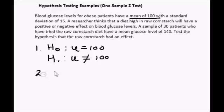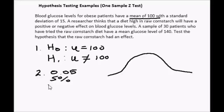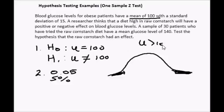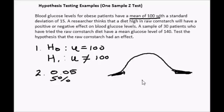The next step is to state the alpha level. If the alpha level is not mentioned in the question, use the standard 0.05, which is five percent. On a normal distribution curve, our alpha level is the area in the tails. We have a two-tailed test because the alternate hypothesis is μ ≠ 100. These two tail areas add up to five percent, so we have 2.5 percent in each tail.